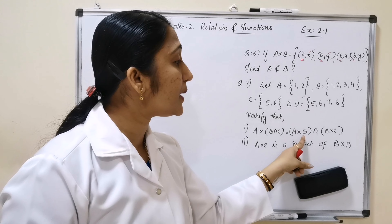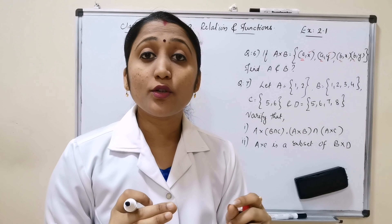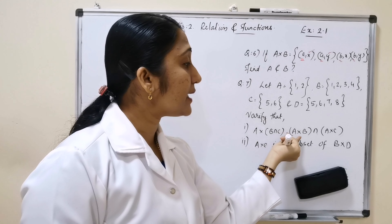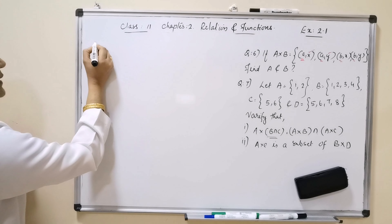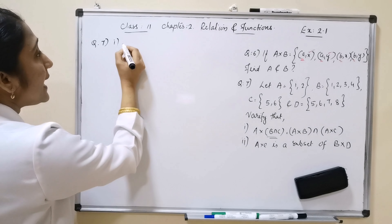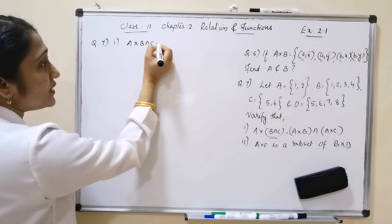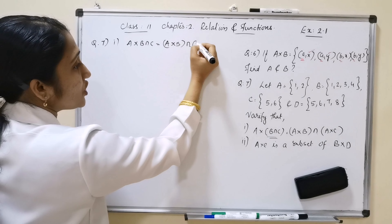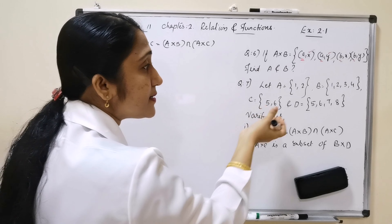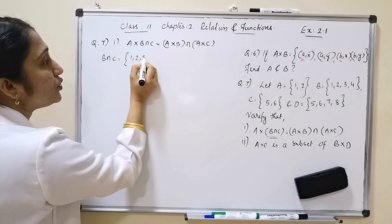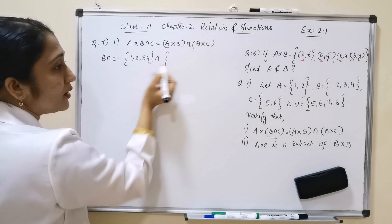Question number 7: A = {1,2}, B = {1,2,3,4}, C = {5,6,7,8}. We want to verify that A×(B∩C) = (A×B)∩(A×C). First, we need to find B∩C — the common elements between sets B and C.